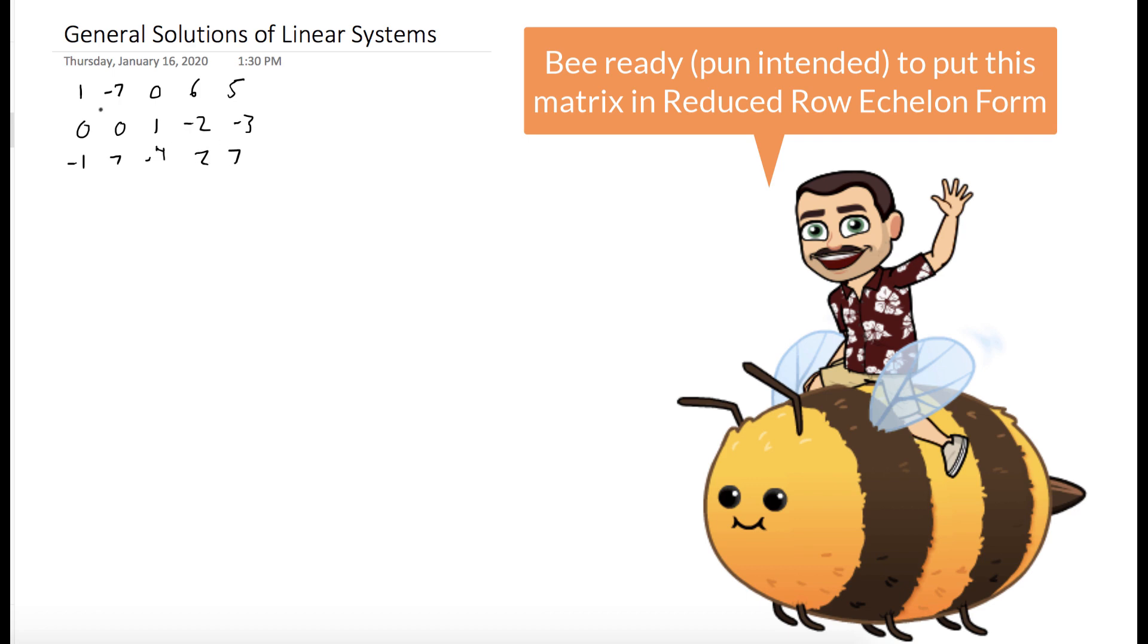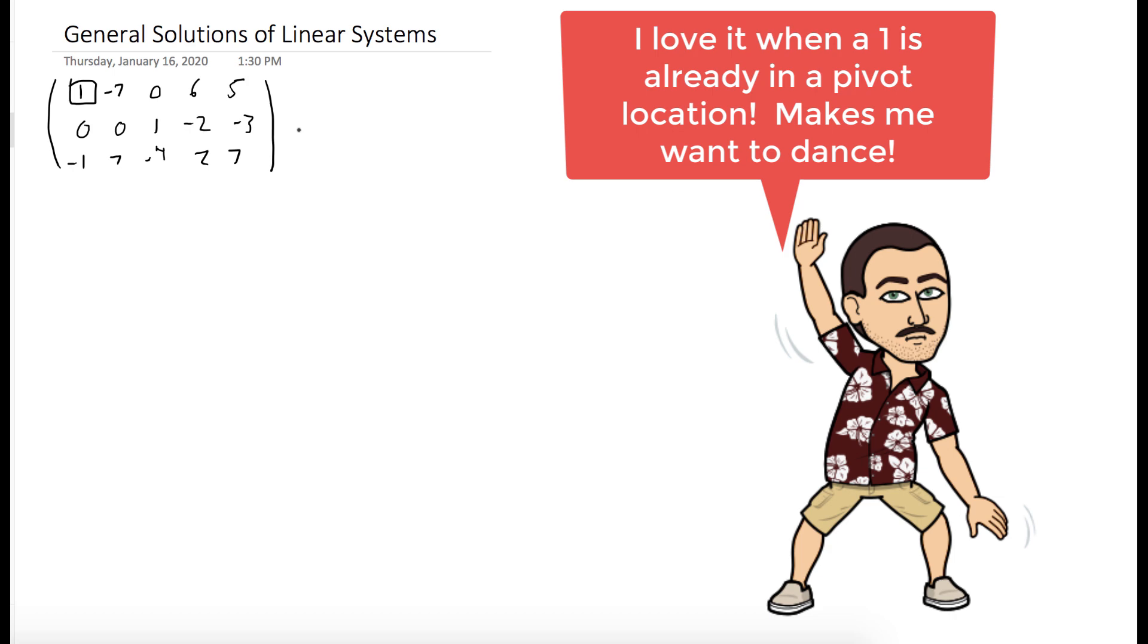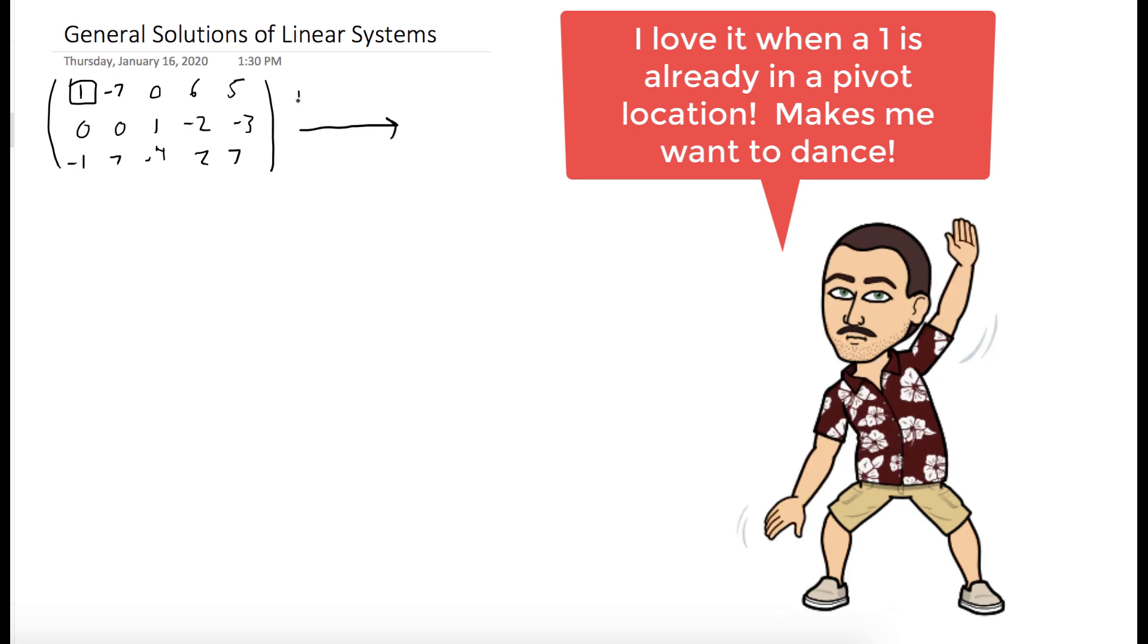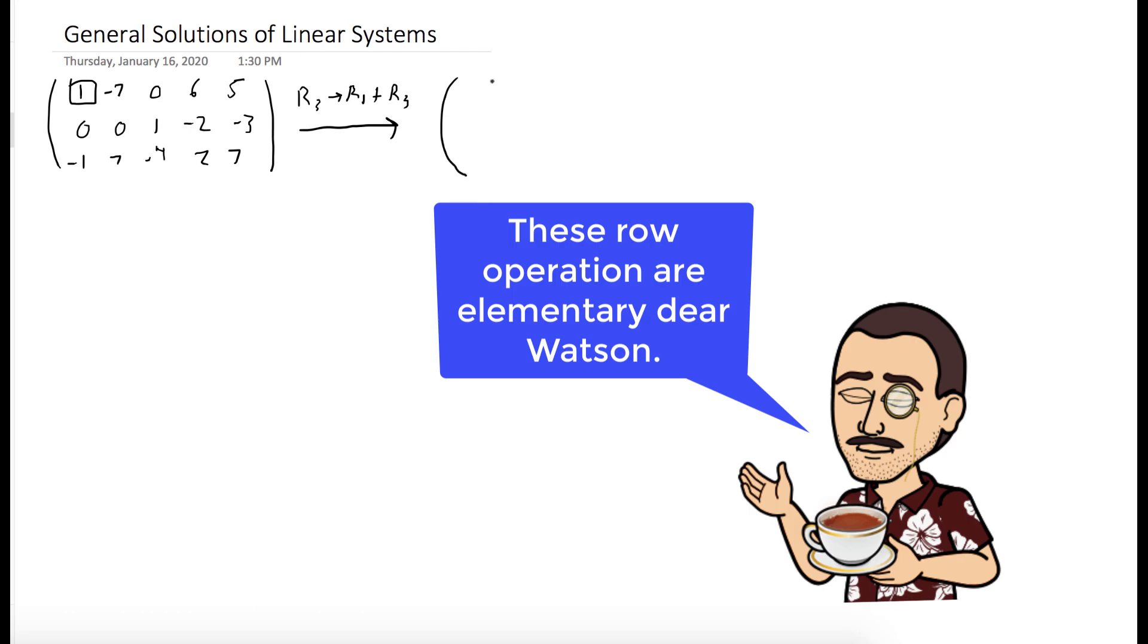So here's our matrix, and we can use this one to eliminate all the entries below it, which just happens to be the negative one in the third row. So to get rid of the negative one in the third row, let's replace the third row with the first row plus the third row. And that results in this matrix.